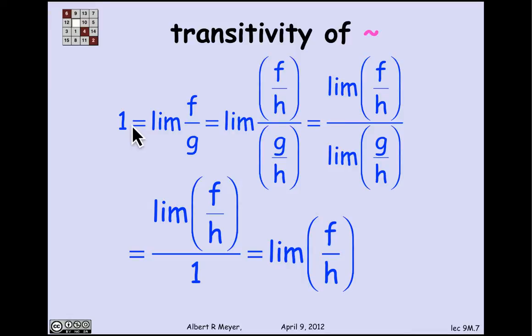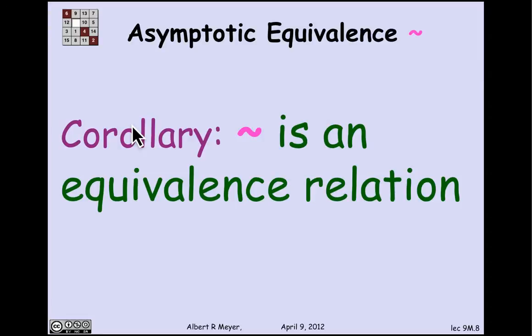This is not really very interesting stuff. The top level message is that many of these elementary properties of asymptotic equality and the other asymptotic relations that we're going to see follow by this kind of elementary algebra and distributing the limits over sub-expressions. The corollary is that asymptotic equality is, in fact, an equivalence relation. We've proved it's symmetric and transitive, and it's trivially reflexive.